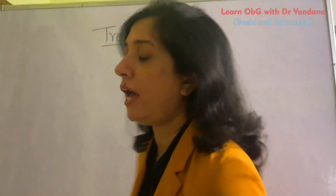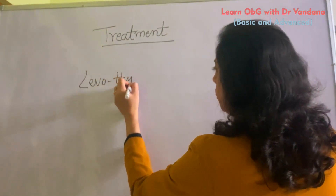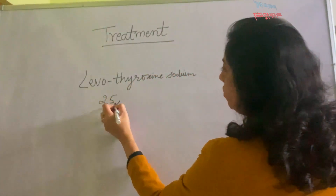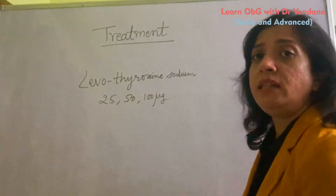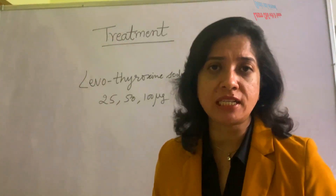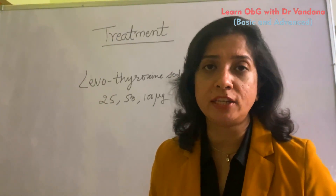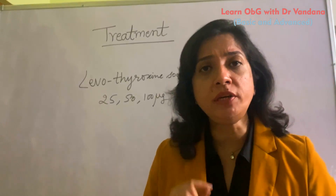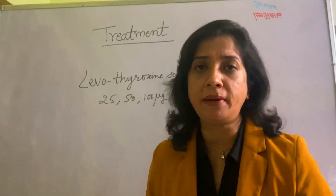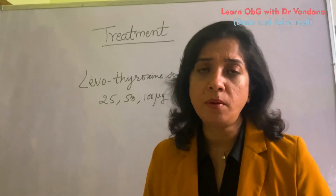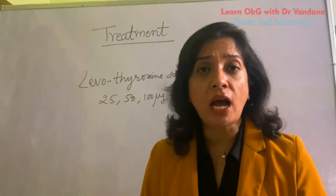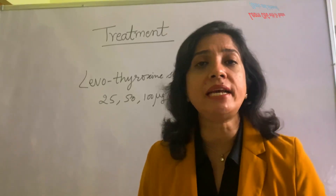Coming to the treatment of hypothyroidism in pregnancy: the drug given is Levothyroxine Sodium. It is available in strengths of 25, 50, and 100 micrograms. It is a Class A drug as per US FDA classification, meaning it is very safe in pregnancy with no known contraindications and no side effects if the dose is properly titrated. Clients should be advised to take it first thing in the morning on an empty stomach, waiting at least 30 minutes before breakfast. If a dose is missed, it can be taken whenever remembered, and if an entire day is missed, two tablets can be taken the next morning.